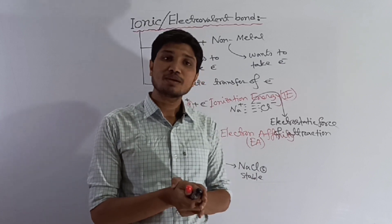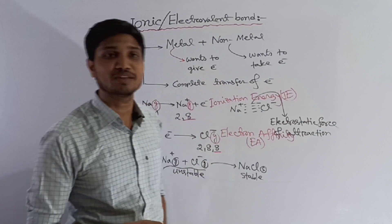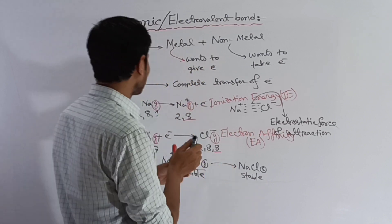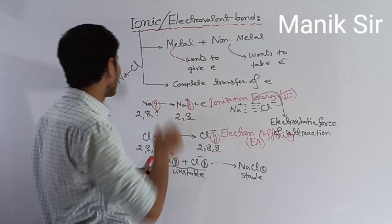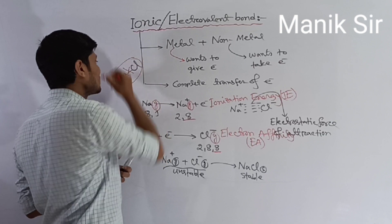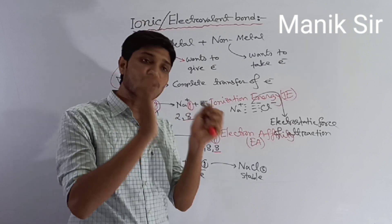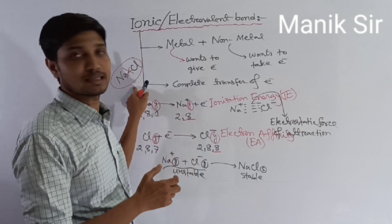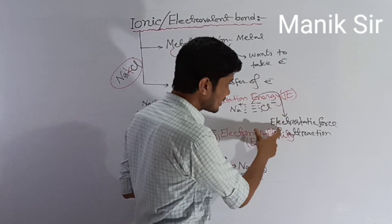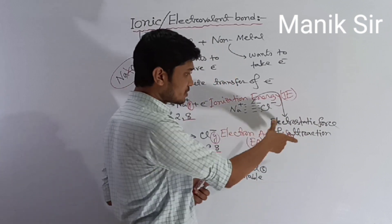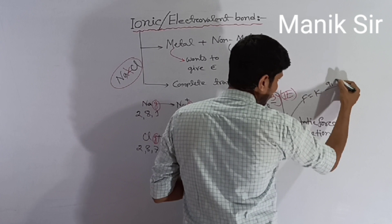The ionic bond is a non-directional bond — it acts equally in all directions because it is based on electrostatic force. The electrostatic force of attraction follows Coulomb's law: F = kQ1Q2 / R². This means the force between the positive and negative ions depends on their charges and the distance between them.